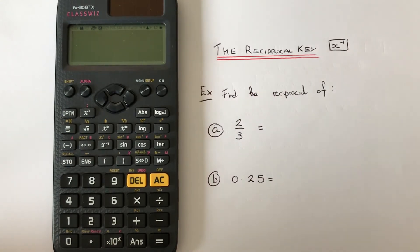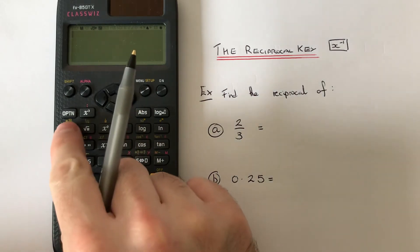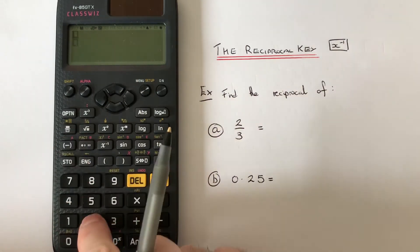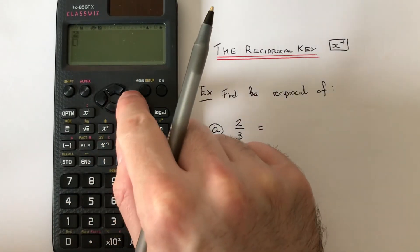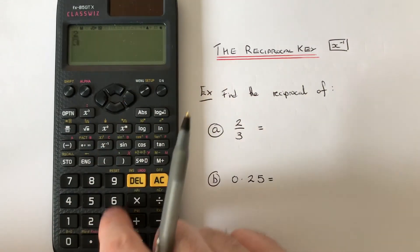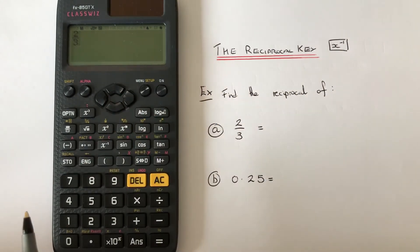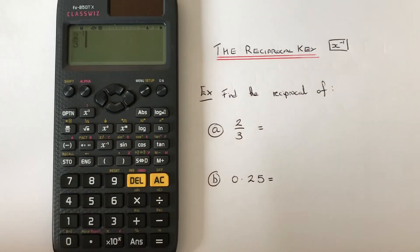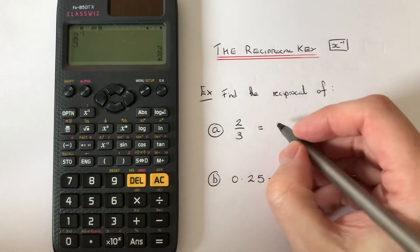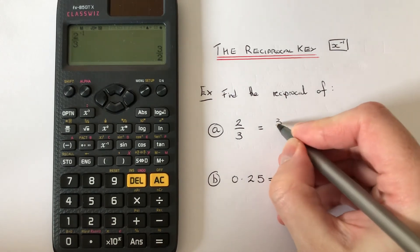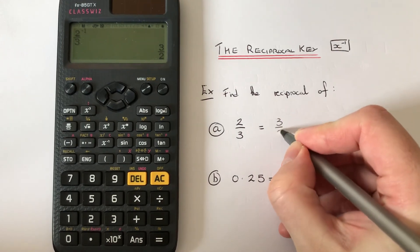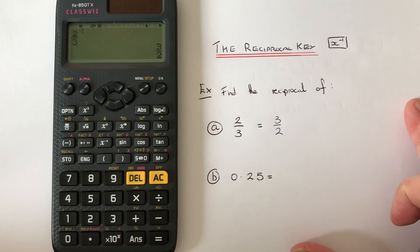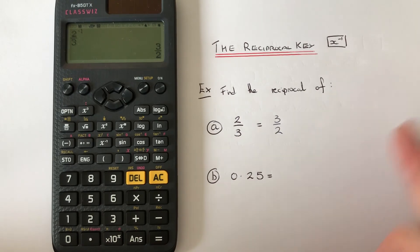Let's have a look at two examples. First, we've got to do the reciprocal of two thirds. So if we type in our fraction and then press x to the power of minus one, we get the answer three over two.